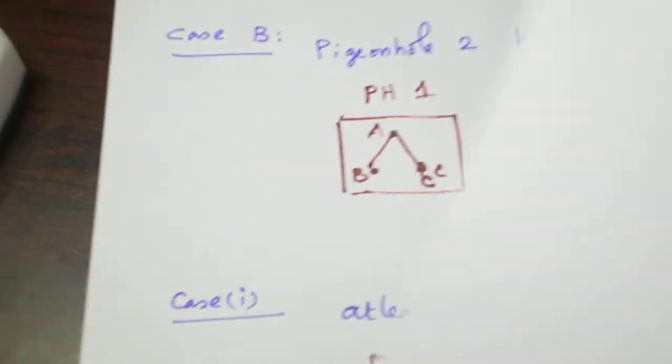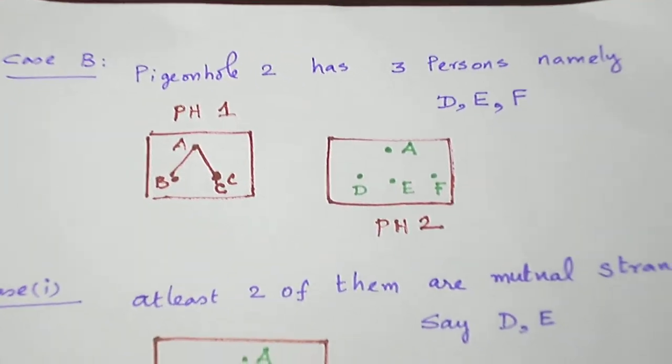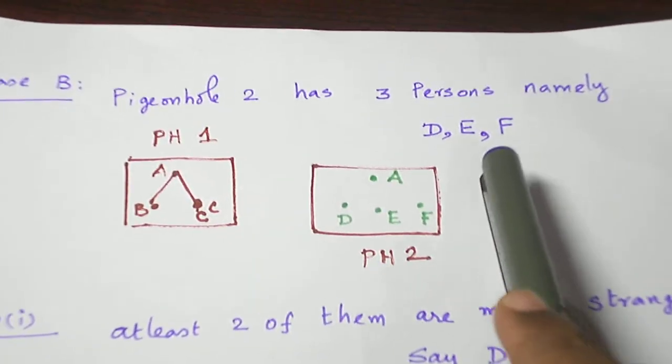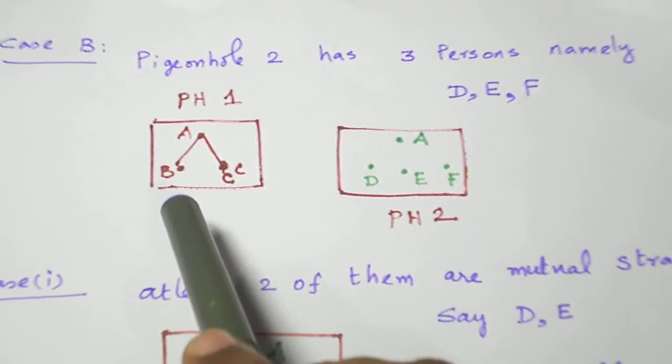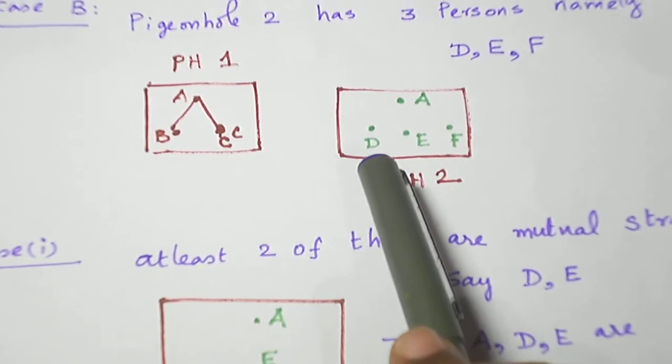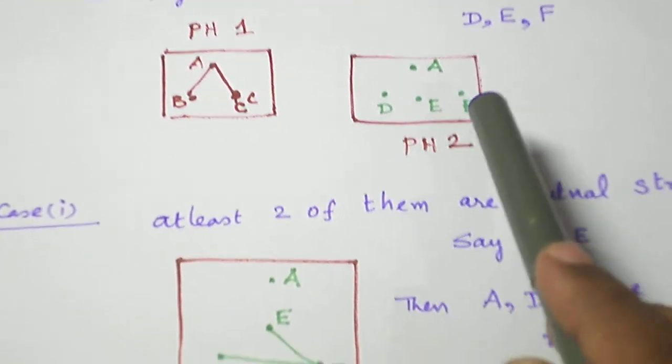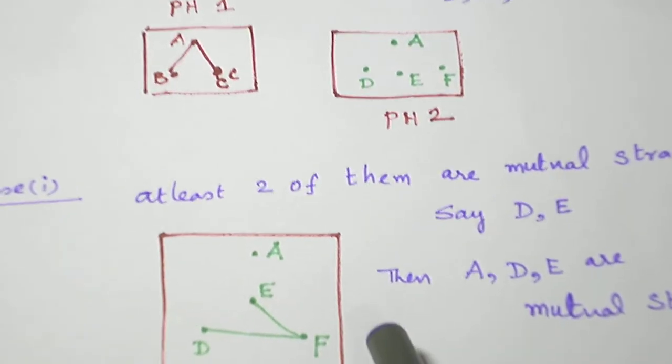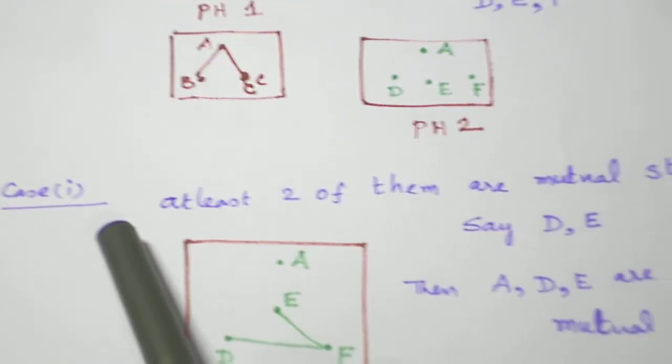Now, case B, pigeonhole 2 contains 3 persons. So I name pigeonhole 1, B and C, pigeonhole 2, D, E, F. So again I take case 1.